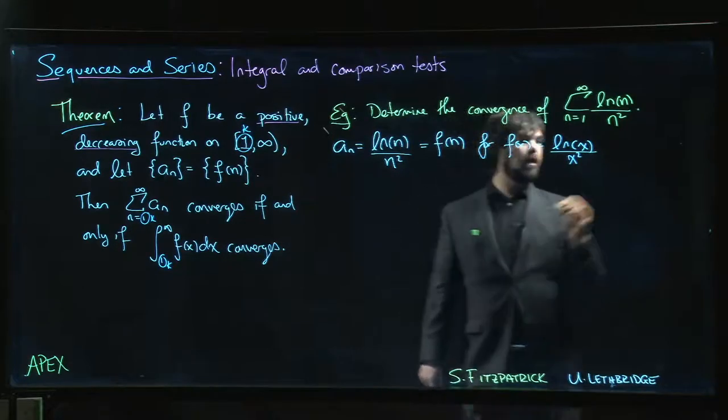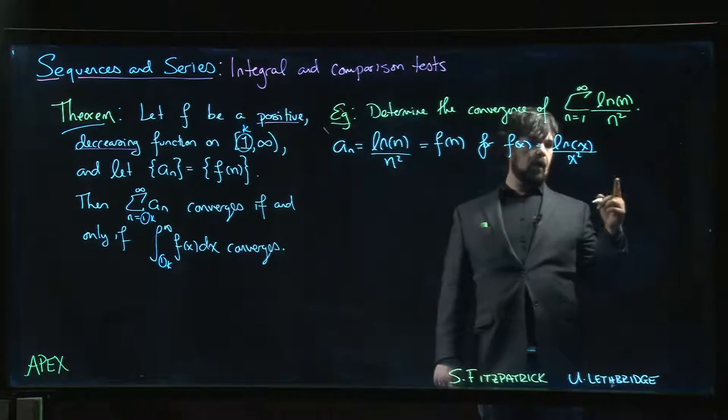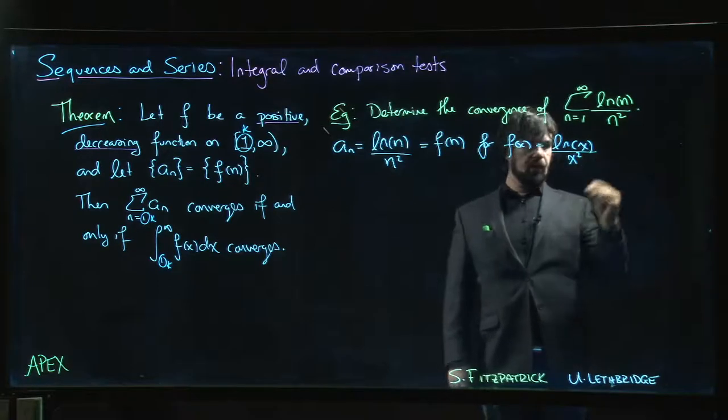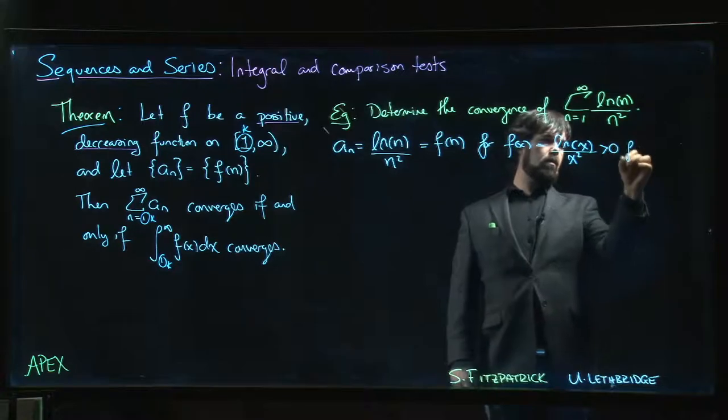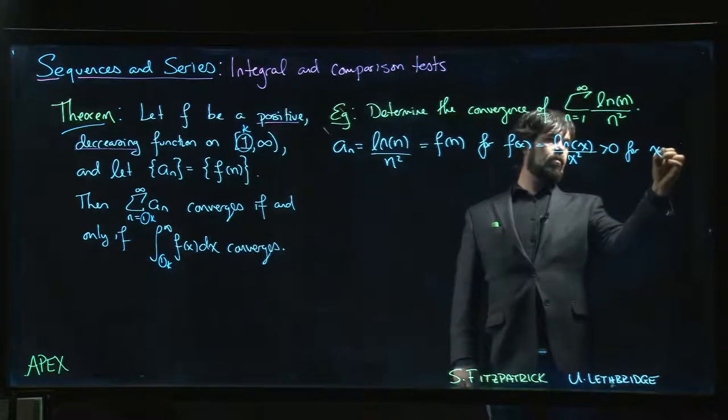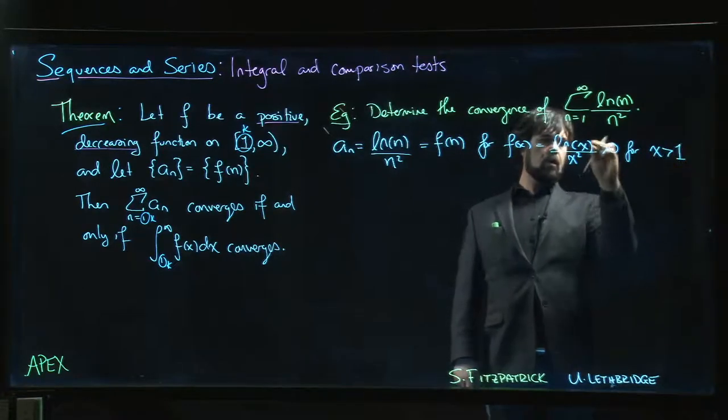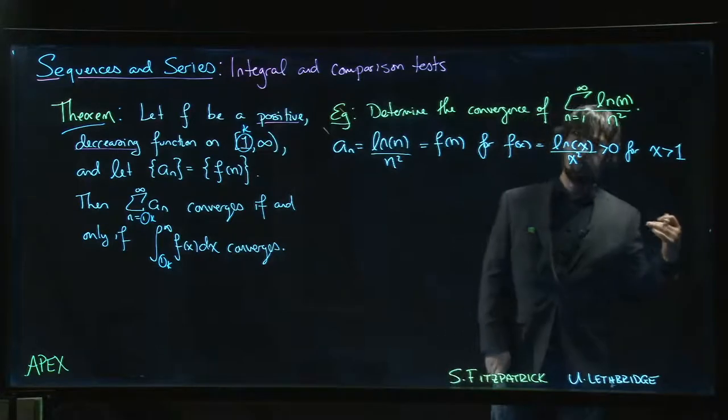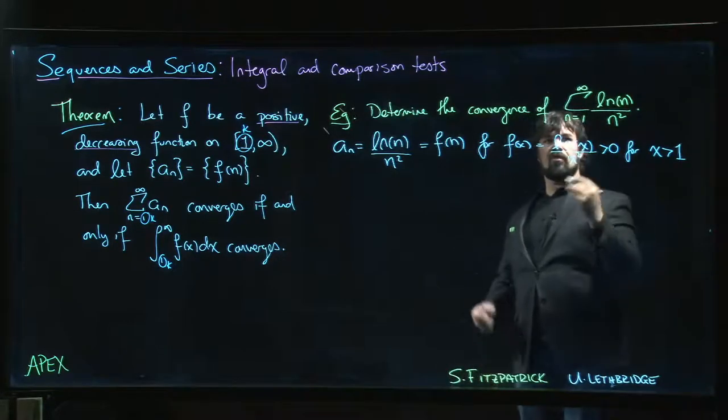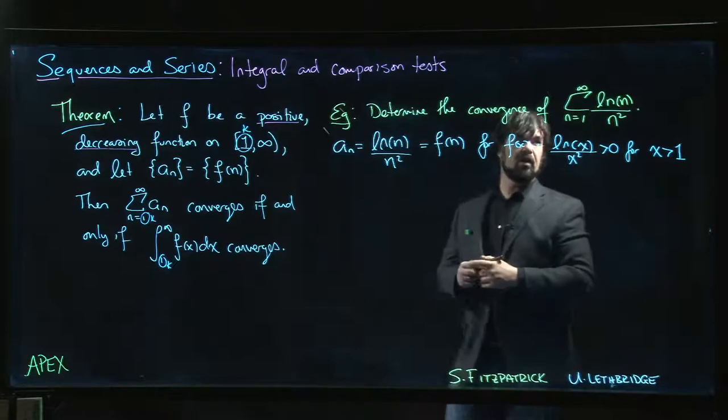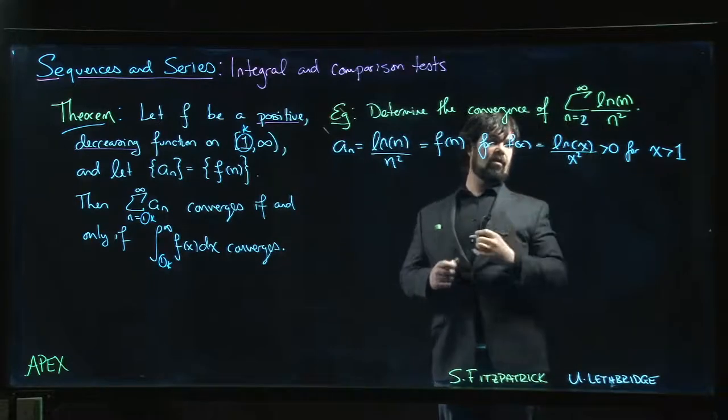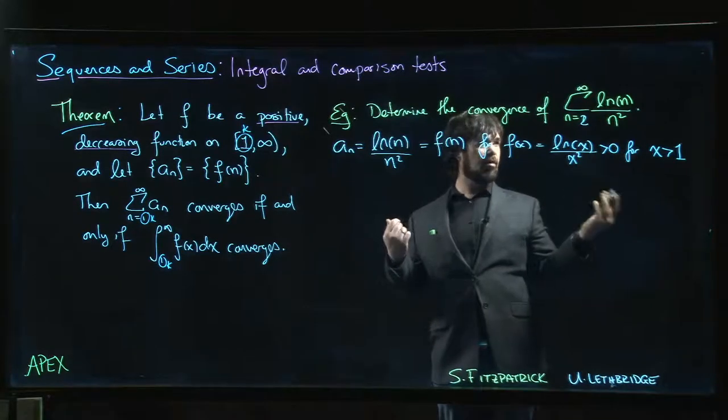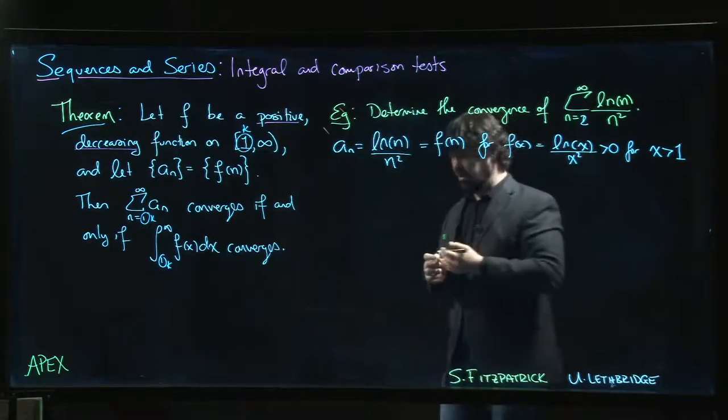So we've got to check our conditions. Is it positive? It's positive as long as the natural log is positive, and that's true as long as x is bigger than 1. Log of 1 is 0, so the first term in this series is actually 0. So really, we should say that n starts at 2. We can put n equals 1 in there, but the n equals 1 term is 0. We're adding 0. It doesn't change anything.